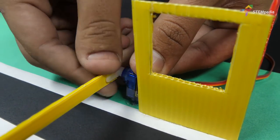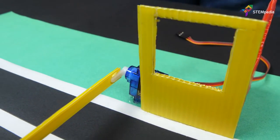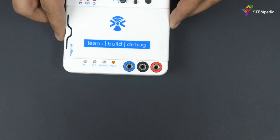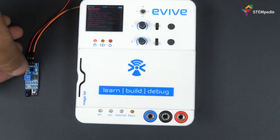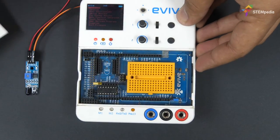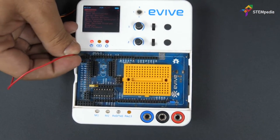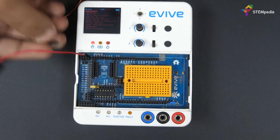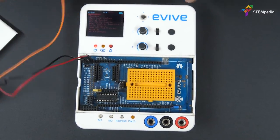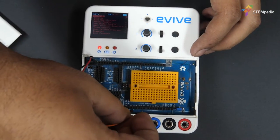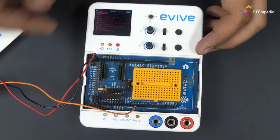Now, to sense the entry and exit of the vehicles, we are going to use two IR sensors, one for entry and the other for exit. But first, let's test the IR sensor. Connect VCC of IR sensor to evive's 5V pin. Connect ground of IR sensor to evive's ground pin. Connect signal pin of the IR sensor to evive's digital pin 3.